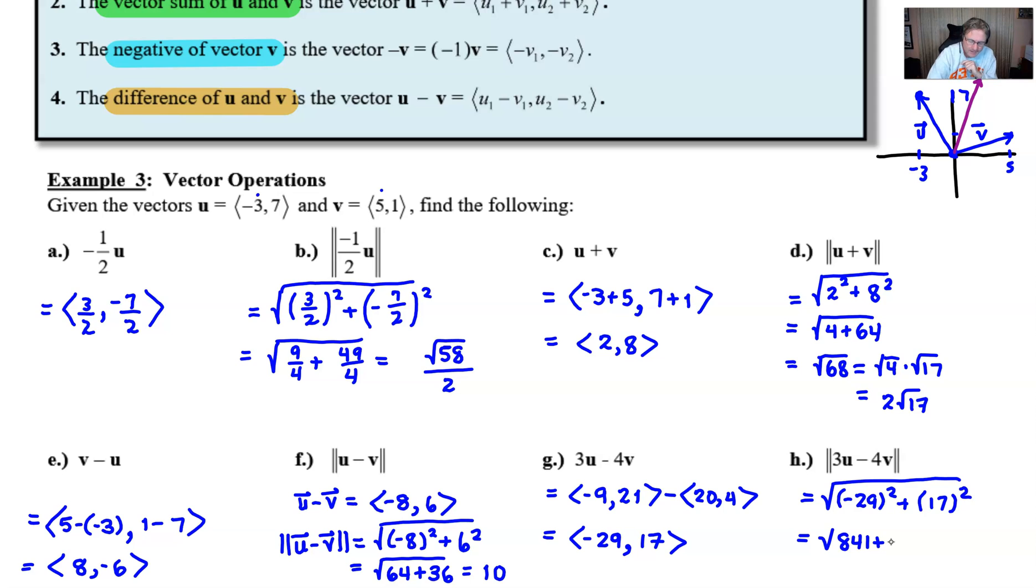Negative 29 squared, take my word for it, is 841. And 17 squared, let's work on that. 17 times 17, that's 289. Of course, yeah, that's what it is, 289. And then if we go ahead and add these together, we get a large number. Zero, three, carry the one. Looks like we're going to get the square root of 1330, and I'm not going to leave...